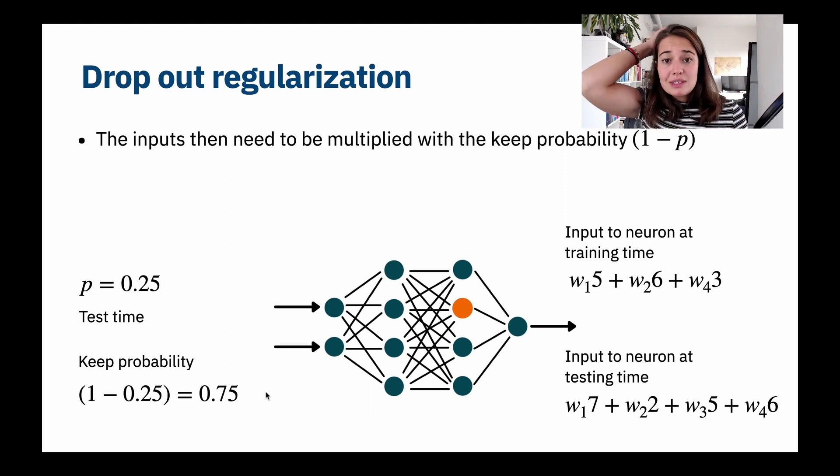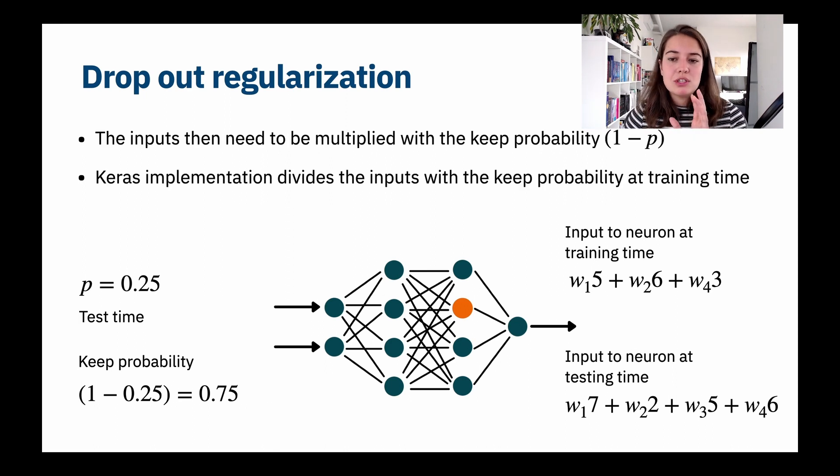With Keras, how we do it is basically you just need to add some dropout layers in between. Keras does it for you. It takes a little bit of a different approach. What it does is instead of doing this extra calculation in the test time, it already divides the inputs by the keep probability at training time.